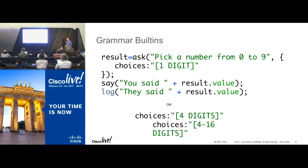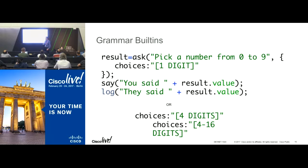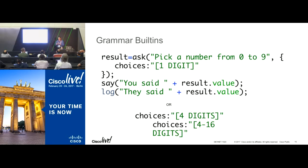We also have built-in grammars. For example, 'pick a number zero to nine' - you could list all ten digits as choices, but imagine asking for a four-digit input where you'd need choices from zero all the way up to 9,999. Instead, we have built-in grammars for digits. You can specify exactly four digits expected, or a range like four to sixteen digits - useful for account numbers with variable lengths.